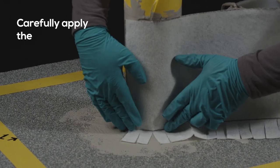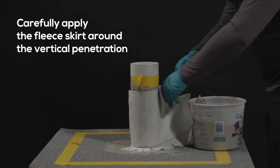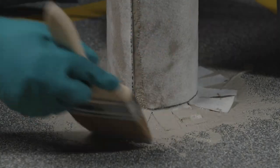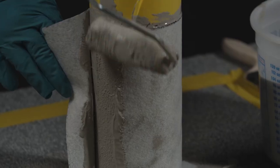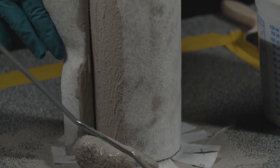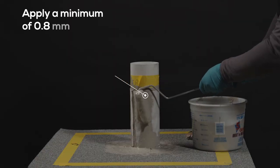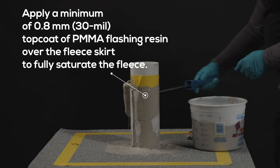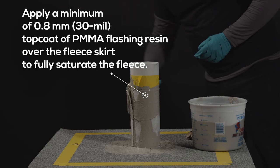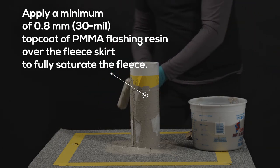Carefully apply the fleece skirt around the vertical penetration. Embed the back of the fleece skirt flashing. Next, carefully apply a minimum of 0.8 mm or 30 ml top coat of PMMA flashing resin over the fleece skirt to fully saturate the fleece.